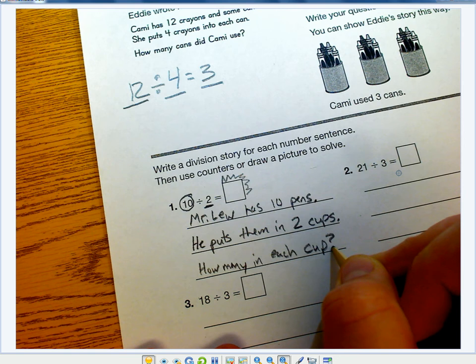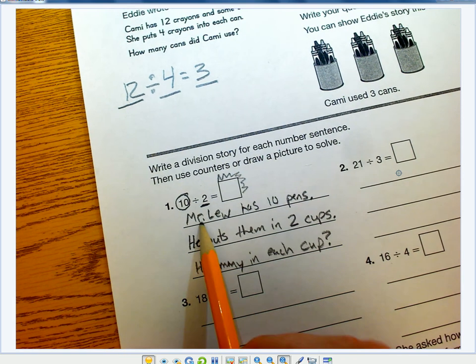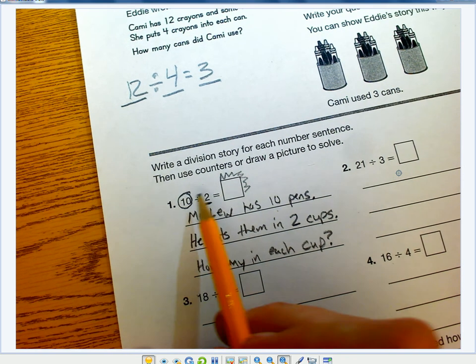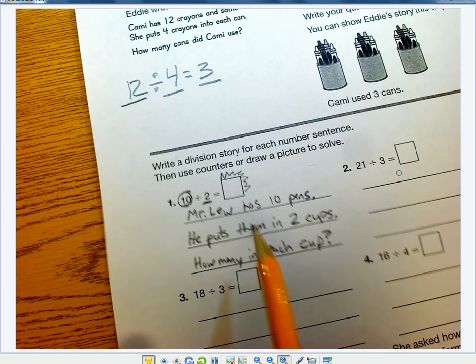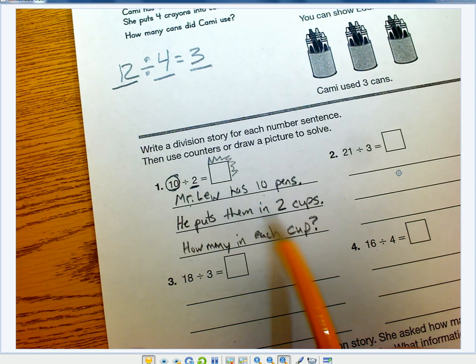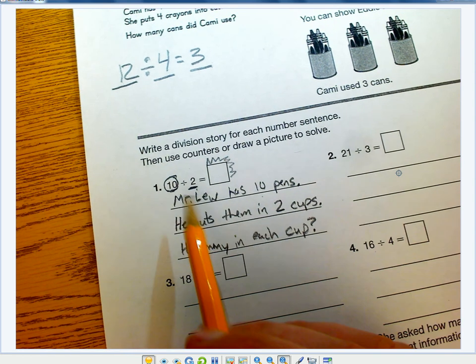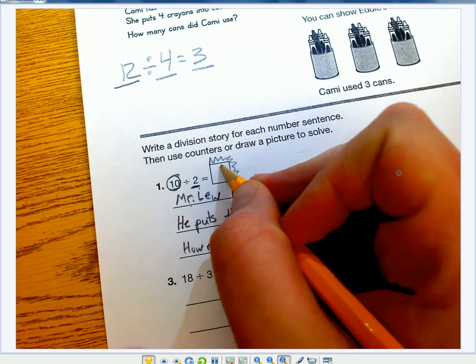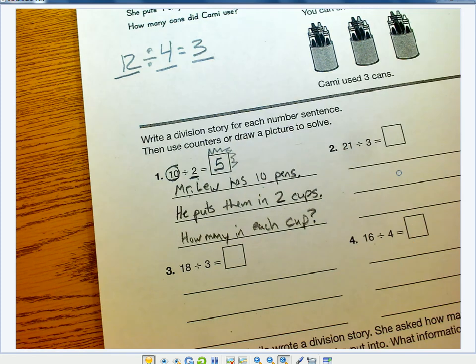So that's an easy one. You have a person, 10 total pens, that's my biggest number. He has 2 cups to put them in, the amount of groups. And then how many in each group? The answer to this one would be 5 pens in each group.